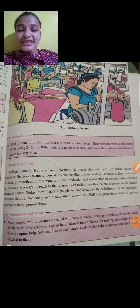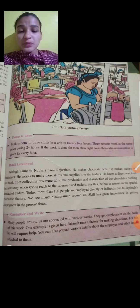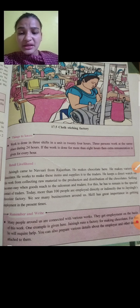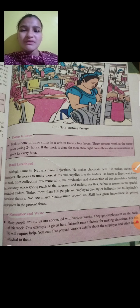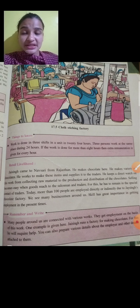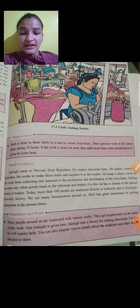Many people around us are connected with various works and they get employment on the basis of this work. One example is given here: Jai Singh runs a factory for making chocolates and will require help. We have seen that many people are getting employment from various sources — Jai Singh runs a factory, makes chocolate, and requires help.